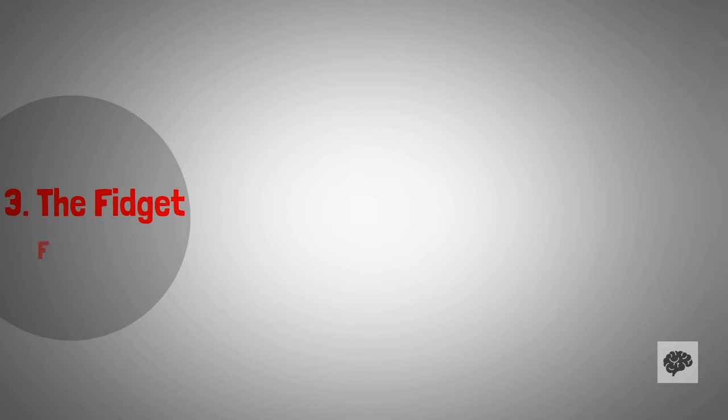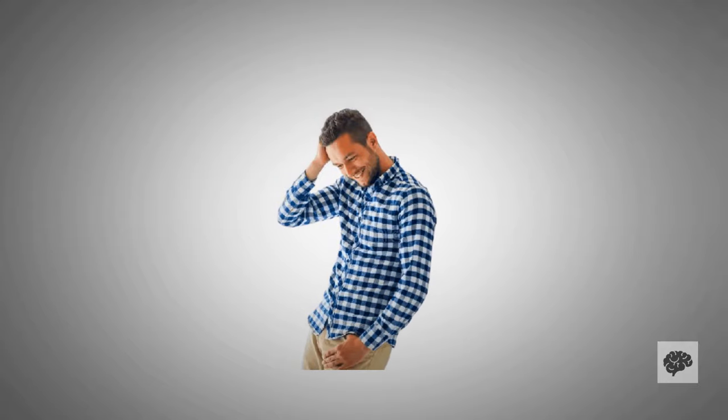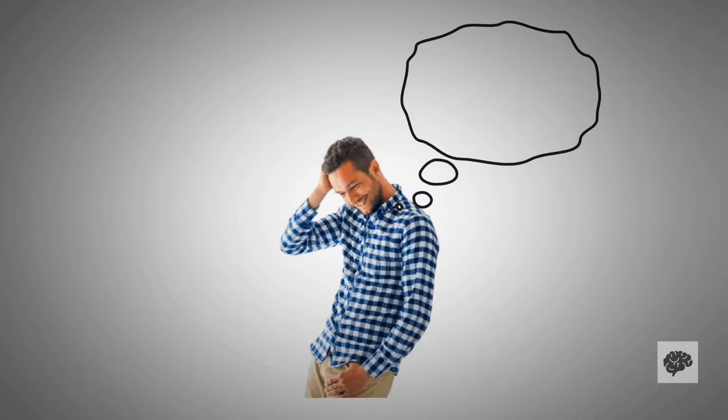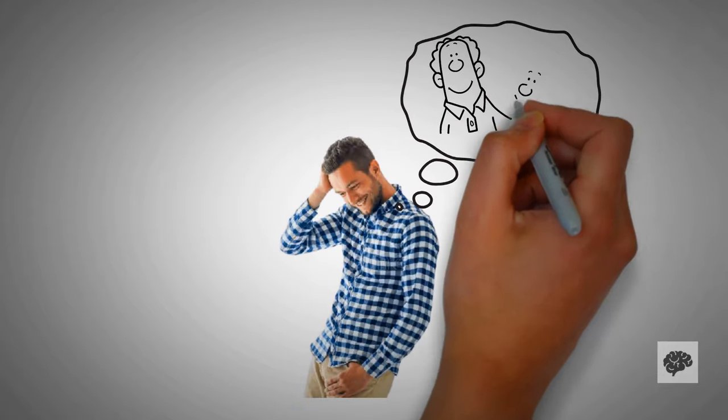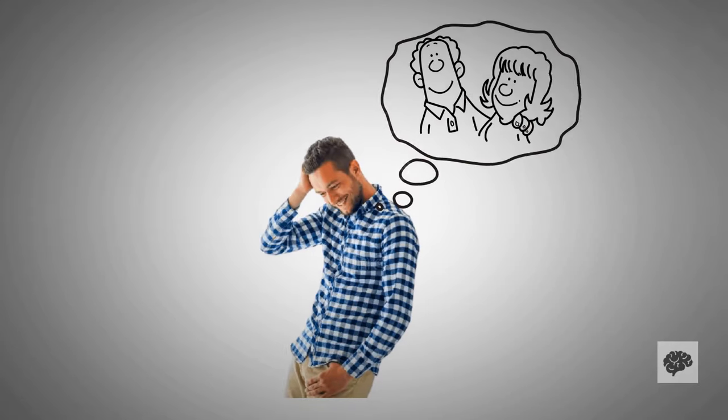Number three, the fidget factor. If you notice him fidgeting or finding any excuse to touch his hair when you're around, take it as a solid tip-off. The man's got you on his mind, and his nerves are dancing the jitterbug because of it. Now, most guys aren't even aware they're doing it.